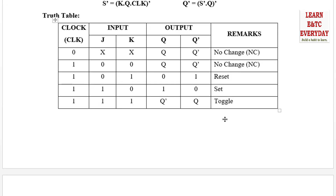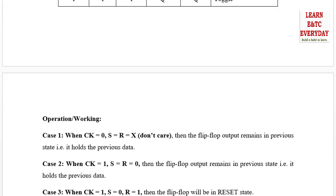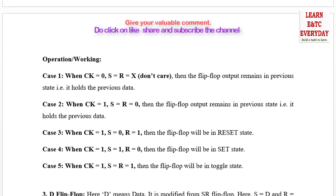When the flip-flop toggles, Q becomes Q complement and Q complement becomes Q — we do get an output, but it is a toggling output. The flip-flop is in toggle state. In the SR flip-flop, we got no valid output — that was the invalid state. But here we do get an output, just in toggling form. This is called the toggling race condition, whereas SR had an undefined or forbidden race condition.